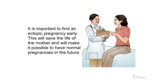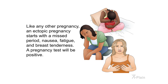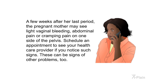It is important to find an ectopic pregnancy early. This will save the life of the mother and make it possible to have normal pregnancies in the future. An ectopic pregnancy starts like a regular pregnancy with no special signs in the early weeks — a missed period, nausea, fatigue, and breast tenderness, and a positive pregnancy test. A few weeks after her last period, the mother may notice light vaginal bleeding, abdominal pain, or cramping pain on one side of the pelvis. Schedule an appointment with your health care provider if you notice such signs, as these can also be signs of other problems.